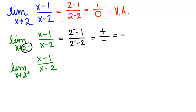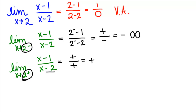Since the answer must be negative and the only choices were positive or negative infinity, the limit from the left is negative infinity. Using similar reasoning approaching 2 from the right: a number close to 2 minus 1 is positive. A number a little bigger than 2 minus 2 is also positive. A positive divided by a positive is positive, so the limit from the right is positive infinity.